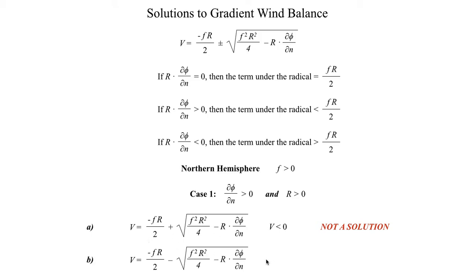Now let's take a look at the negative solution. Again, the term under the radical is something smaller than FR over 2 by the logic from the previous segment. Since R is positive, we have a big negative number minus a small negative number, which also gives us a negative value for V. So that's not a solution either — this first case with dφ/dn positive and R positive doesn't give us any physically meaningful solutions at all.